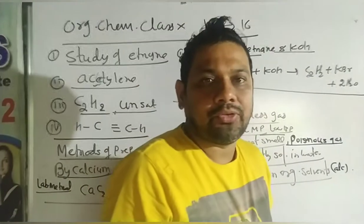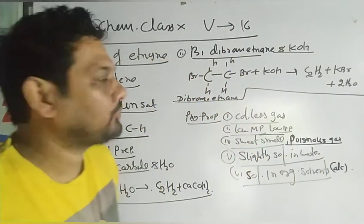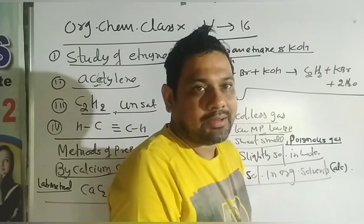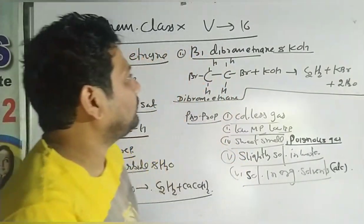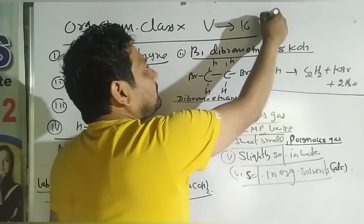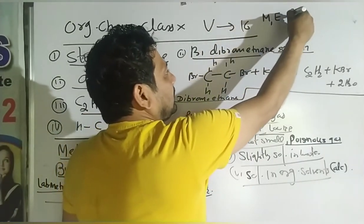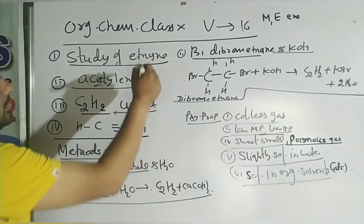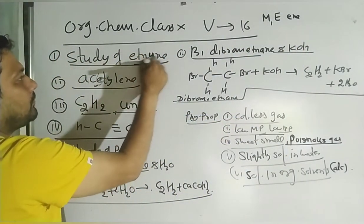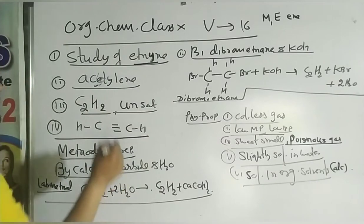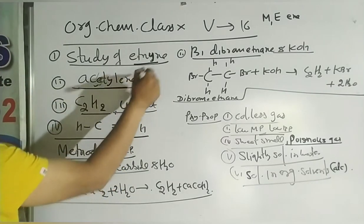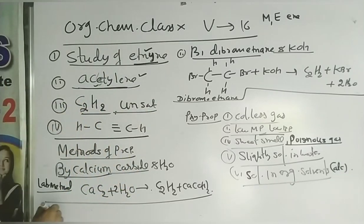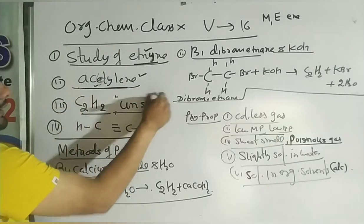Welcome to Giant Tutorials online class for physics, chemistry, and maths. Today we study 10th chemistry — it is organic chemistry. We are in video number 16. In videos 14 and 15 we covered methane, ethane, ethene. Now we study ethyne, also called acetylene — it is an unsaturated hydrocarbon.